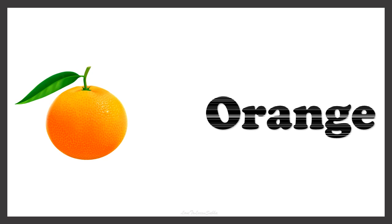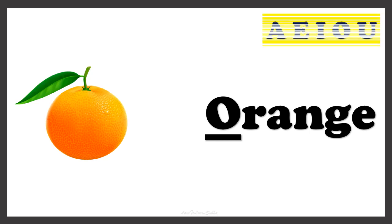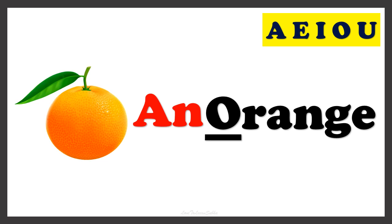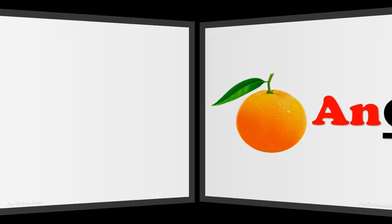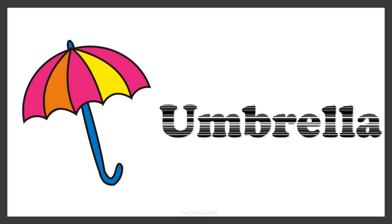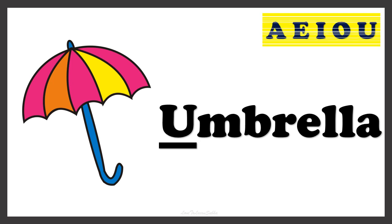Now this one is ORANGE. To find the article to be placed in front of the word ORANGE, we have to check the first letter of the word. Orange has the first letter O, and O is a vowel. So whenever the word starts with a vowel, we use AN. AN ORANGE. Now we also say AN UMBRELLA, as umbrella starts with the vowel U.